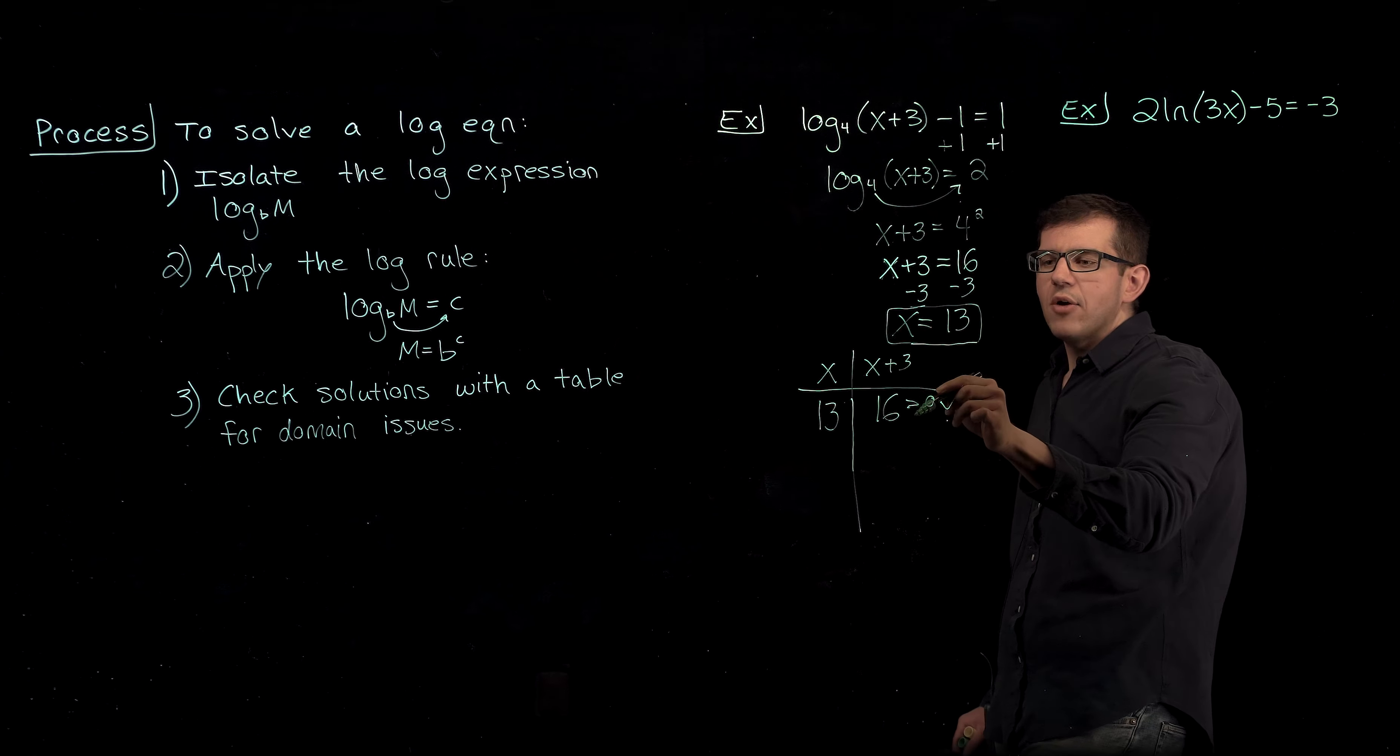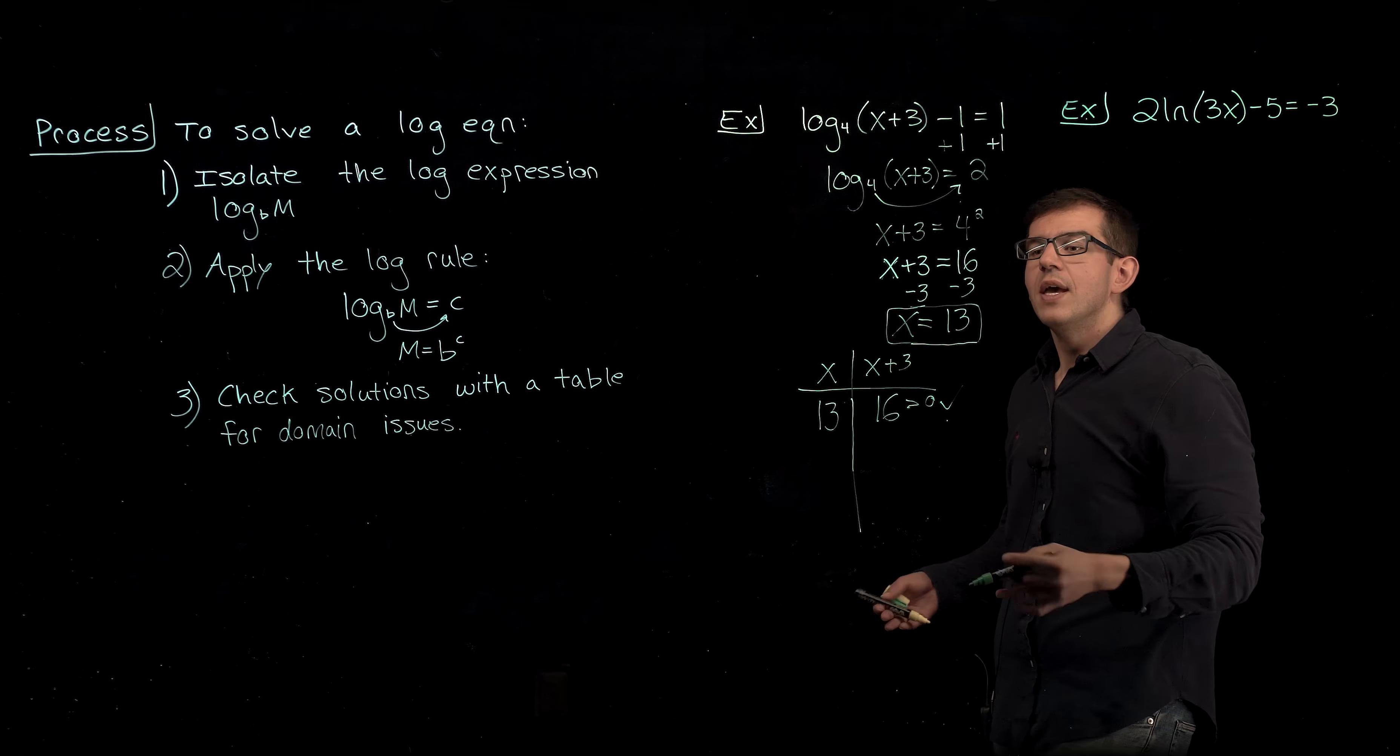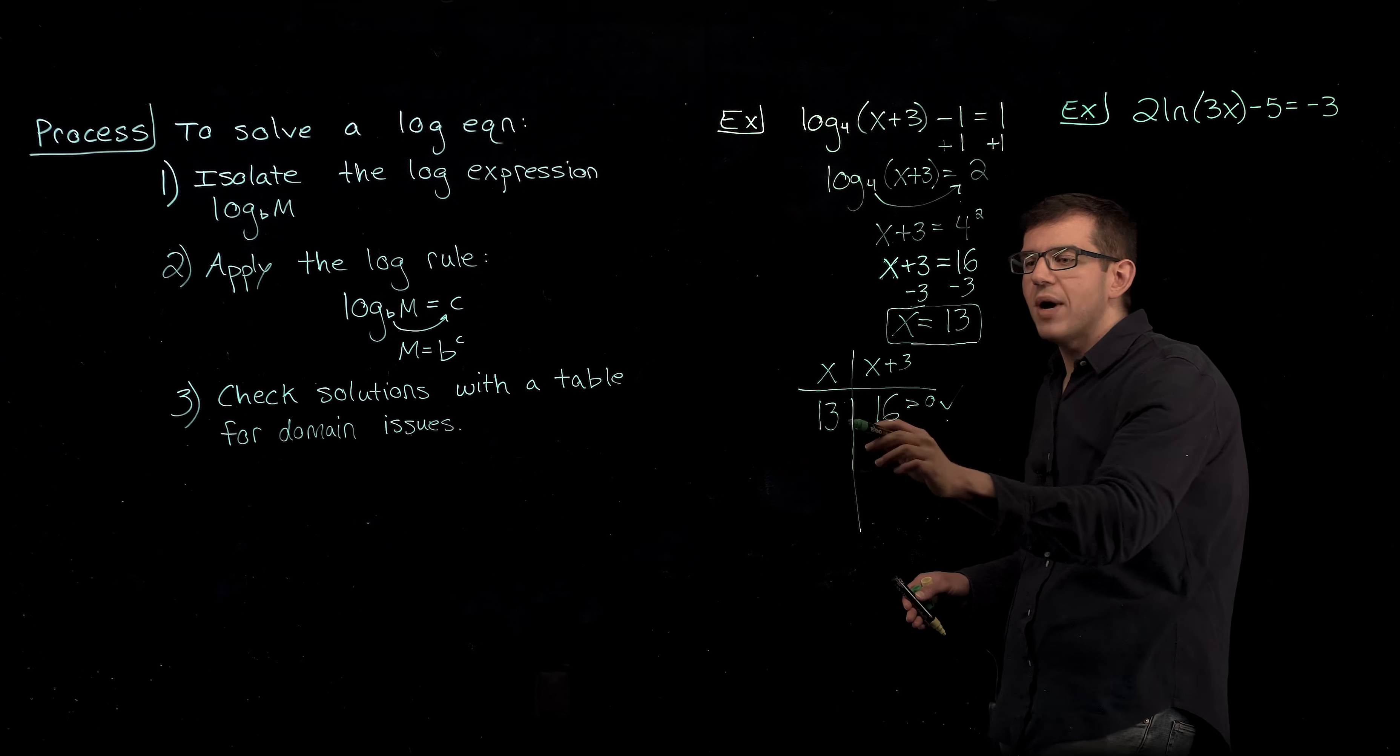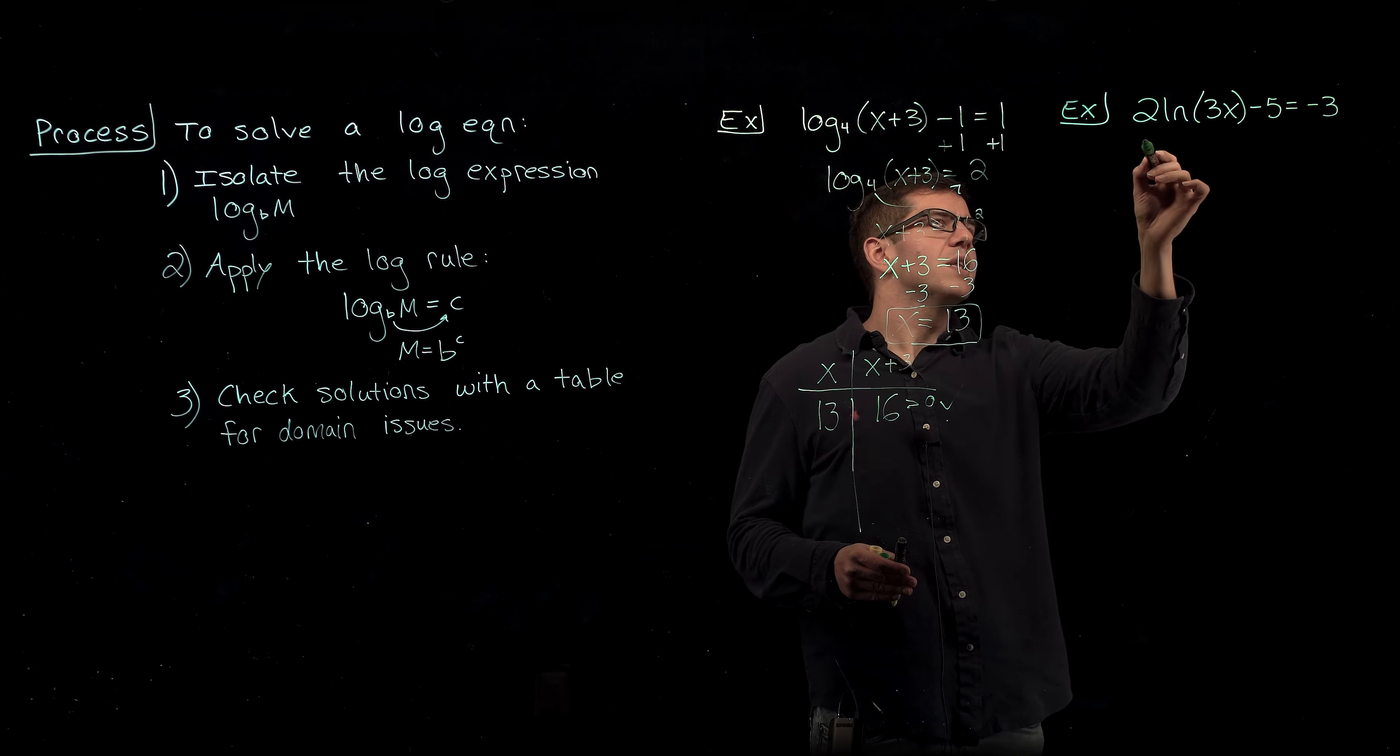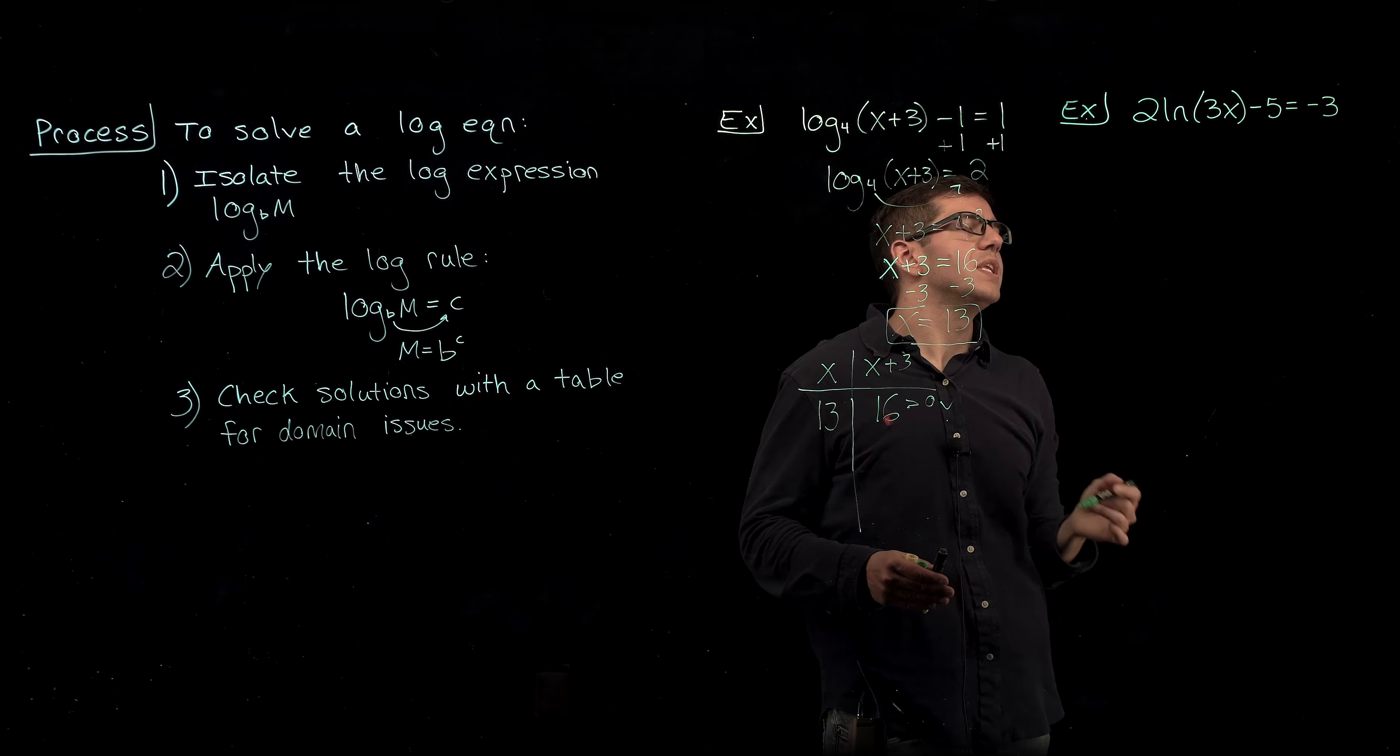If we had found that this value were 0 or negative 5 for instance, that would tell us it fails the domain check, which would mean that there would be no solution since our only possible answer doesn't actually work. Okay, take a moment, pause the video, and see if you can solve 2 natural log of 3x minus 5 is equal to negative 3.